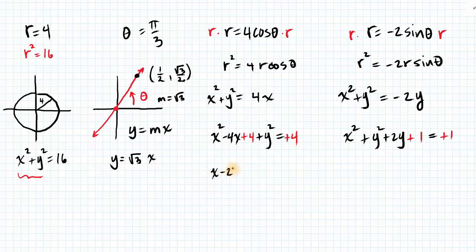Over here we have x minus 2 squared plus y squared equals 4. This is a circle that has a center of 2 comma 0 and a radius of 2.